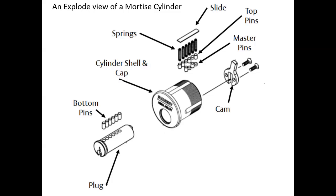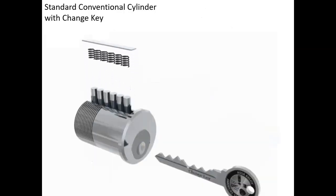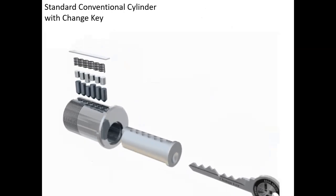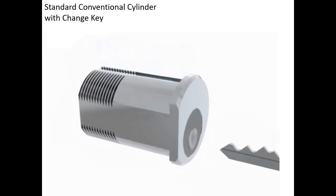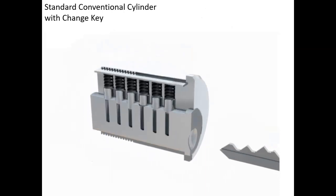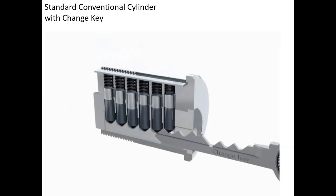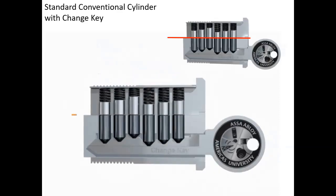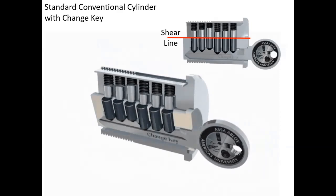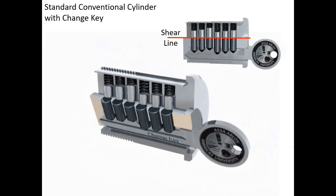Next, we're going to show how a cylinder operates. Here are keys being inserted — there's a cut key. There are different pins loaded within the cylinder to correspond to the cut key, and of course springs and a slide. The key is inserted and what you want to accomplish is a shear line. The shear line is accomplished when the correct pins match the notches in the key, or cuts, and you get your shear line allowing you to turn the key and unlock a door — retract the latch bolt.